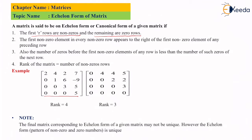Therefore, this matrix has four non-zero rows. In the second matrix, row number 4 has all zeros — it is a zero row — and the other three rows are non-zero rows. In echelon form, the first R rows are non-zero and the remaining rows are zeros. So in this second matrix, the first three rows are non-zero and the last row is a zero row.